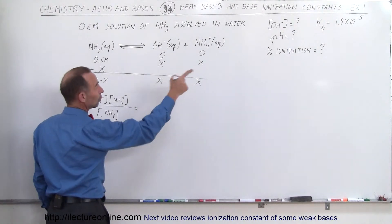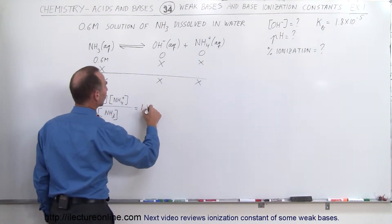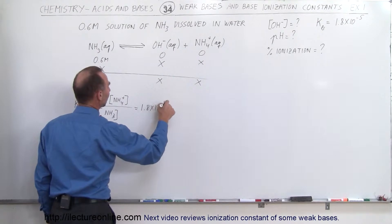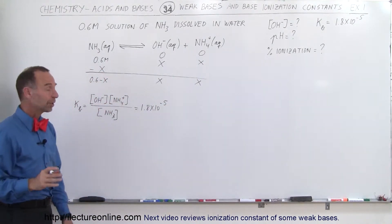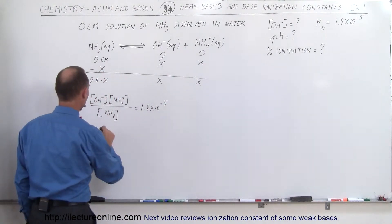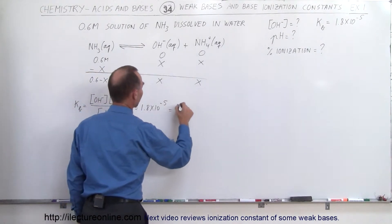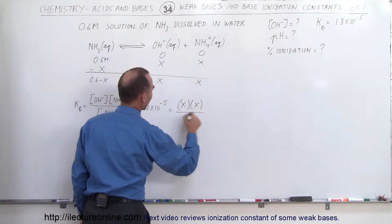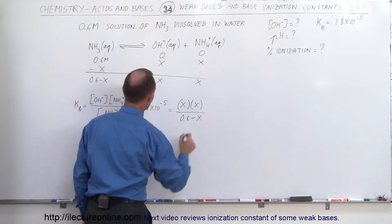And in this case, K sub B is 1.8 times 10 to the minus 5. So then we can say we replace this by X and X, so this can be written as X times X divided by 0.6 minus X.